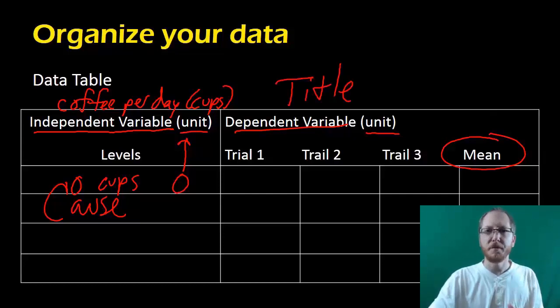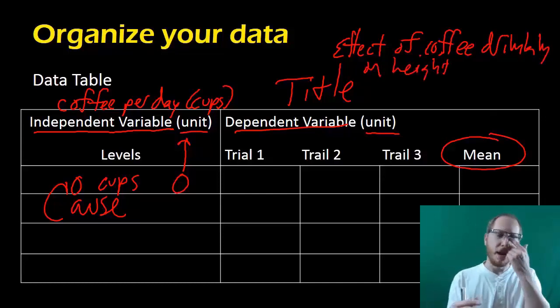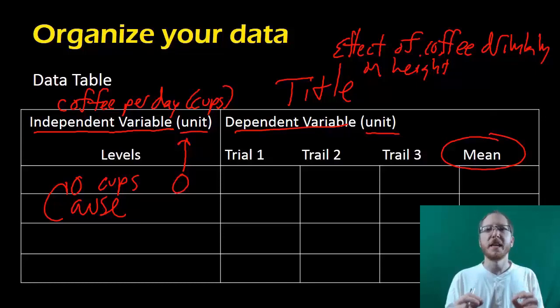You also want to make sure you put a title up top and make sure it's descriptive. Don't get fancy. You need to describe what it is. So if you're making a data table, you might want to label it effect of coffee drinking on height. That way it's very clear when another scientist looks at this, they can look at the title of that data table and figure out exactly what information it contains. They're just looking at what is this data table going to convey to me so that I can get as much information as possible as quickly as possible from it.